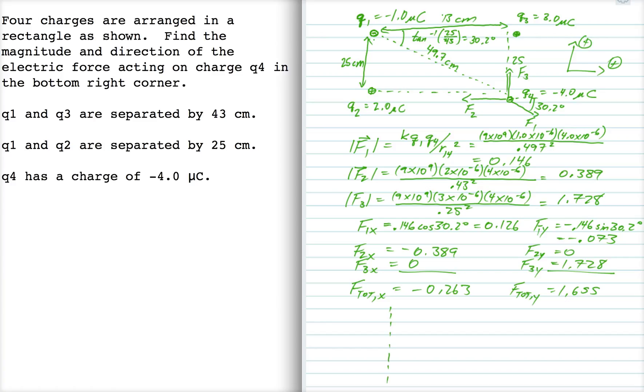So I draw myself a little coordinate system, and I go 0.263 to the left in the negative x direction, and I go 1.655 up. And that's going to be my resultant force that I'm looking for, F total.